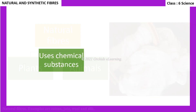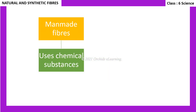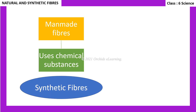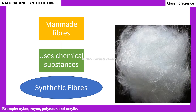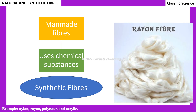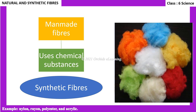Fibers that are made by man from chemical substances are called synthetic fibers. Examples include nylon, rayon, polyester, and acrylic.